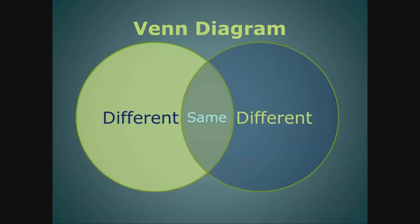Venn diagram. A Venn diagram is used to compare and contrast two things. When you compare two things, you look for things that are the same. In a Venn diagram, that is the middle where the two circles meet and overlap.